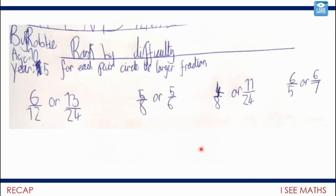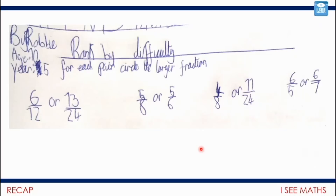Let's move on to a slightly different example from Robbie. Pause the video and have a go - which is the larger fraction, and rank them by difficulty. Six-twelfths is a half; thirteen out of twenty-four is more than half, so that must be larger. Same numerator but larger denominator means five-eighths is less than five-sixths. Six-fifths is more than one, six-sevenths is less than one - using one as a benchmark in a different way. Great example, Robbie.